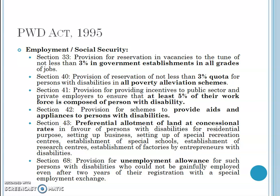The concessional land under Section 43 can be used for setting up special recreation centers for the disabled, establishment of special schools, establishment of research centers, or for establishment of a factory by entrepreneurs with disability. So the government provides many incentives for disabled people to start their own ventures and earn a livelihood. Section 68 provides for unemployment allowance for persons with disability who could not be gainfully employed even after two years of registration with the special employment exchange. If the government cannot provide employment, it will give them unemployment allowance.